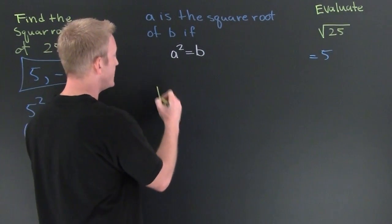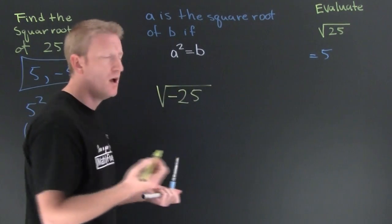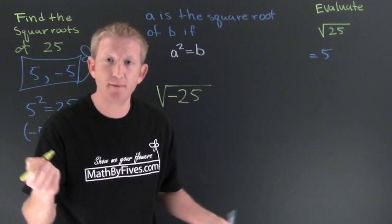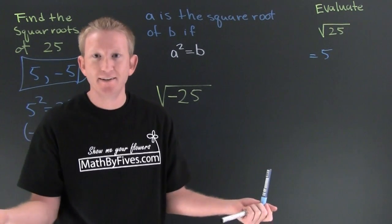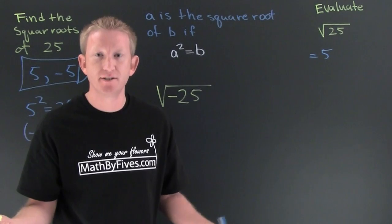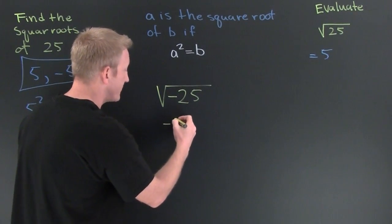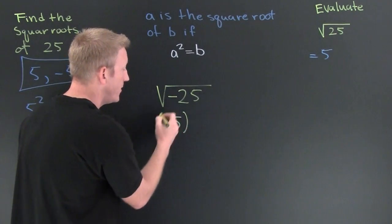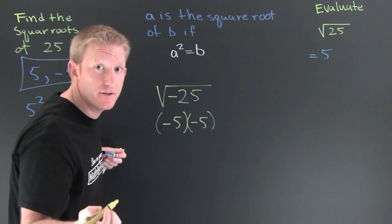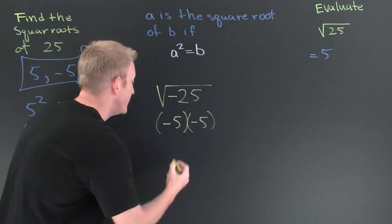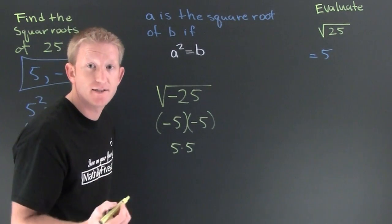What's the square root of minus 25? We're trying to see what number times itself is minus 25. There is no number times itself that's minus 25. Some of you are thinking, well maybe it's minus 5. Well, minus 5 times itself is positive 25. Others are thinking, well maybe it's 5. Let's see: 5 times itself is also positive 25.